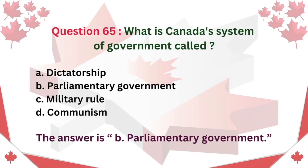Question 65. What is Canada's system of government called? A. Dictatorship B. Parliamentary government C. Military rule D. Communism. The answer is B. Parliamentary government.